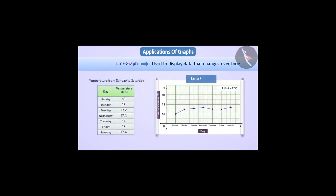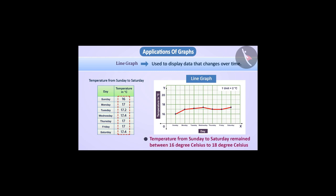A line graph is used to display data that changes over time. As shown in this line graph, temperature of different days of the week. You can see that each data point in a line graph is represented by a point on a graph paper and consecutive points are connected by line segments. Line graphs help us understand the trend of data. Like here, we can say that the temperature from Sunday to Saturday remained between 16 degrees Celsius to 18 degrees Celsius.